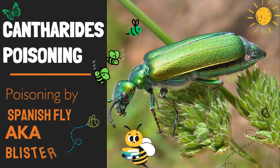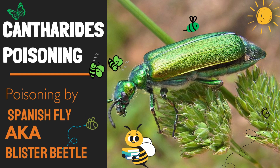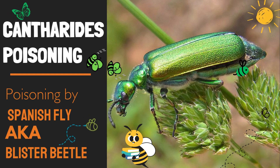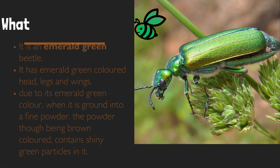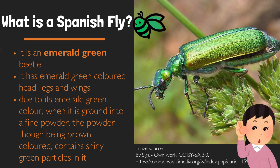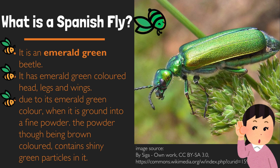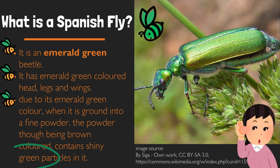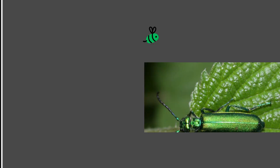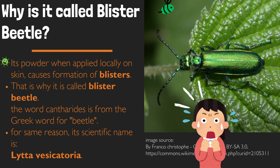Cantharidin poisoning. In this video we will talk about poisoning by Spanish fly, also known as blister beetle. First of all, what is a Spanish fly? It is an emerald green beetle with emerald green colored head, legs, and wings. As you can see in the picture, due to its emerald green color, when it is ground into a fine powder, the powder — though being brown colored — contains shiny green particles in it. Its powder when applied locally on skin causes formation of blisters, that is why it is called blister beetle.